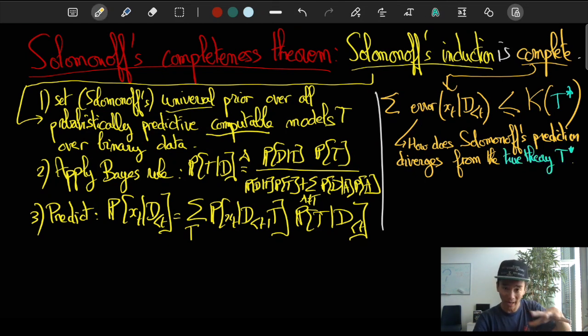So assume we have someone who applies exactly the computation of Solomonoff. I like to call this person a Solomonoff demon. So let's assume the Solomonoff demon is doing the computation of Solomonoff and makes the prediction that is dictated by the equation of Solomonoff. How far are the predictions of Solomonoff demon from the actual predictions of the actual true theory t-star?